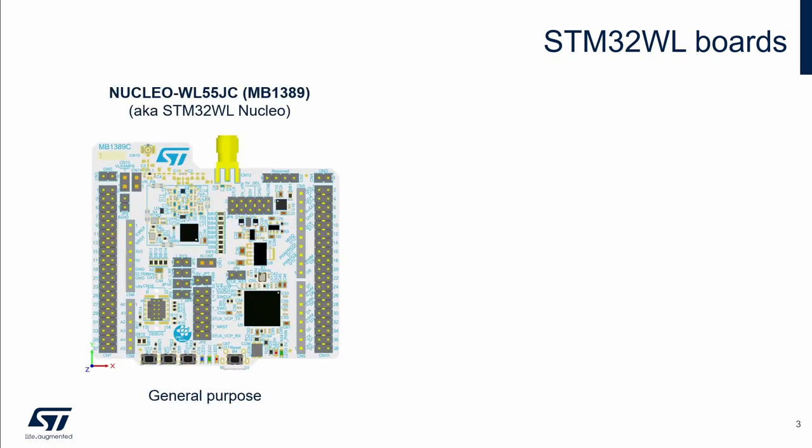There are two types of STM32WL boards from ST. The first one is the STM32WL Nucleo board — a general purpose board for prototyping. There are many features implemented on the board. For this reason, many compromises were made in the design, for example in the PCB layout.